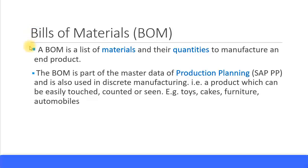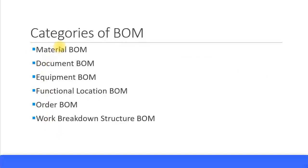There are many categories of Bills of Materials. You can see there are about six categories: Material, Document, Equipment, Functional Location, Order, and Work Breakdown Structure, commonly known as WBS. This is very much towards the PP module, so we'll be concentrating on Material BOM because we're only looking at the list of materials. All the BOMs we are creating will be related to Material BOM.